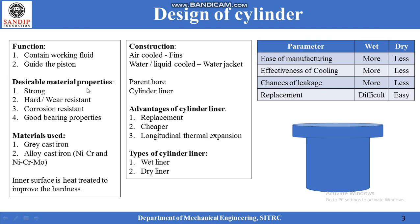The cylinder has some desirable properties: it should be strong enough to withstand the gas pressure, it should be hard enough to resist wear due to the rubbing friction of the piston, it should be corrosion resistant, and it should have good bearing properties. Thus grey cast iron and alloy cast iron are the most popular materials used for cylinder design. The inner surface of the cylinder is heat treated to harden it and improve its wear resistance.